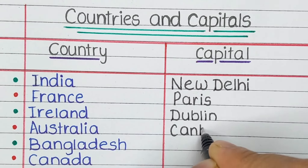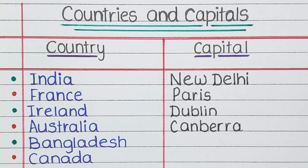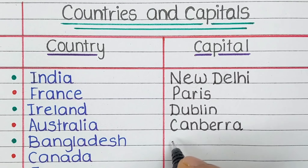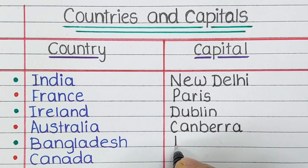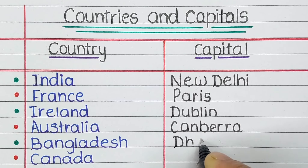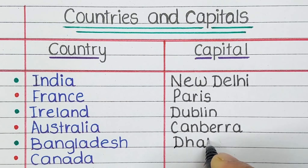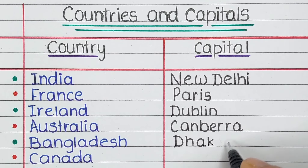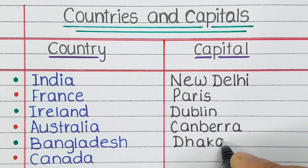Next is Ireland. Its capital is Dublin. Next is Australia. The capital of Australia is Canberra.